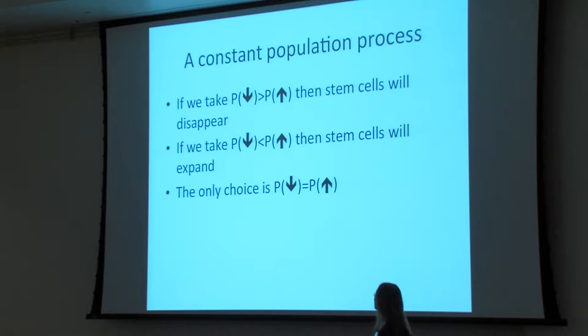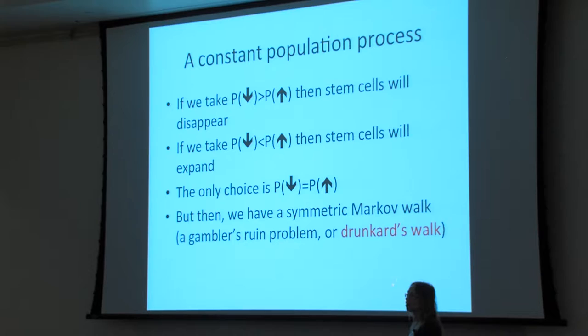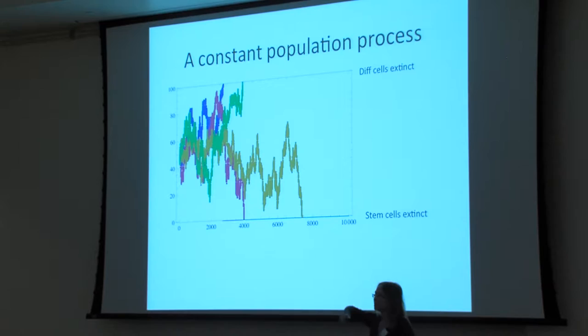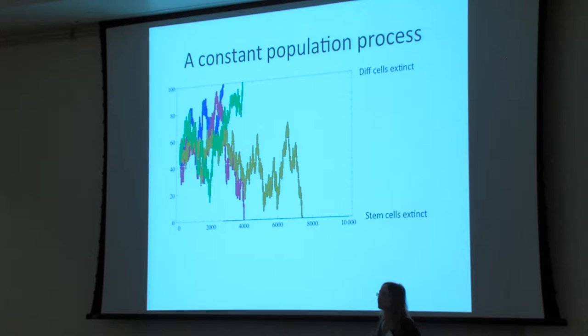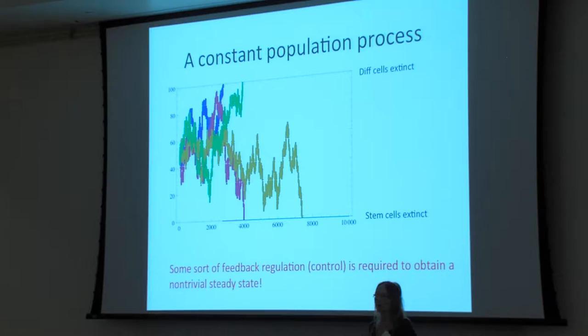If the probability to increase equals the probability to decrease stem cell numbers, you might think that's good — but mathematically this process is called a drunkard's walk or gambler's ruin. The number of stem cells will go up and down randomly and eventually either disappear or grow out of proportion. So we cannot keep the probabilities constant and equal — they must respond to what's going on. The number of divisions of each kind has to be fine-tuned with the current state of the system.